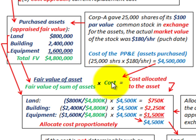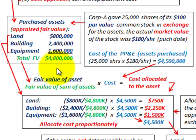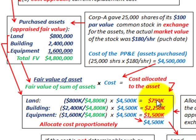The multiplication of the fractional amount times the cost equals the cost allocated to the particular asset. For our land, the fair value is $800,000, divided by the total appraised value of $4,800,000, then multiplied by the cost of $4,500,000, gives us the cost allocated to land of $750,000. We do the same for our building and equipment — take the fair value of each asset, divide by the total fair value, then multiply by the cost.